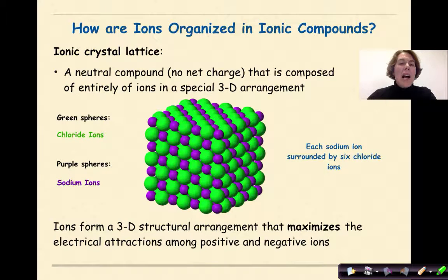So how are ions organized in ionic compounds? Ionic compounds are organized through an ionic crystal lattice, something similar to this one right here. This is a neutral compound, in other words, no net charge, that is composed entirely of ions in a special three-dimensional arrangement.